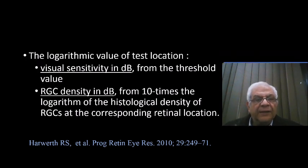The authors in this paper calculated the logarithmic value of test locations. The visual field in decibels is already expressed as threshold in decibels. And they calculated the retinal ganglion cell density in decibels. This was done from 10 times the logarithm of the histological density of retinal ganglion cells at the corresponding retinal location.